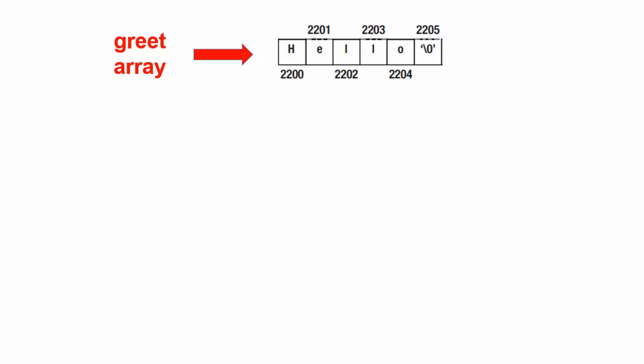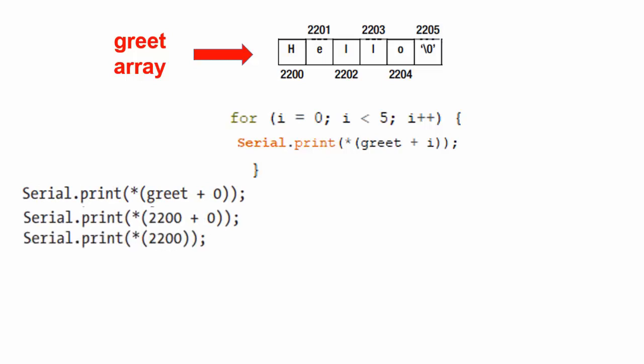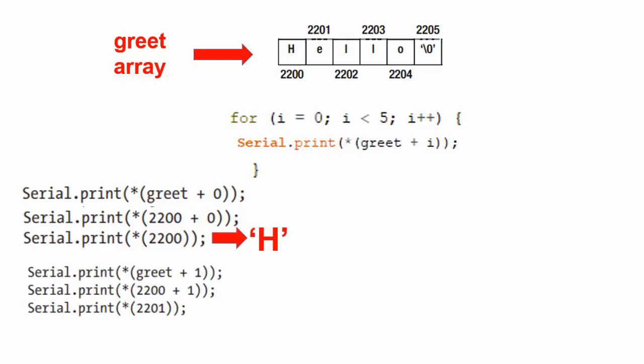This is how the individual characters are stored at the address. Let's discuss these two variations. Assume that the greet array is stored starting with memory address 2200. First, let's discuss the loop with this variation. On the first pass through the loop, because i is 0, the statement resolves like this. The indirection operator simply says to go to memory address 2200 and fetch the character found there. This is the letter h. On the next pass through the for loop, the statement resolves like this, and the indirection operator fetches the letter e.